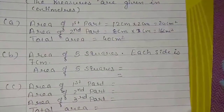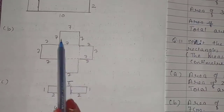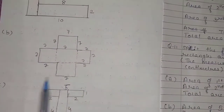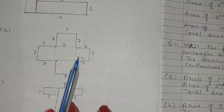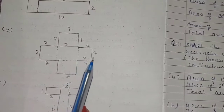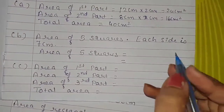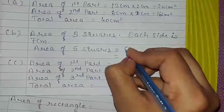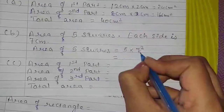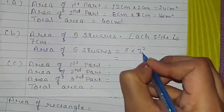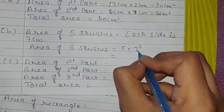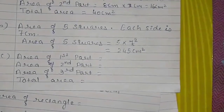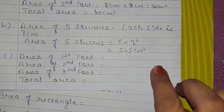Now part B. In question B, you can observe all shapes are squares. There are 5 squares, each with a side of 7 cm. So let us find the area of 5 squares with side 7 cm. Area of 5 squares equals 5 multiplied by 7 squared. Because area of square equals side multiplied by side, that is 7 cm. So 5 multiplied by 49 equals 245 cm square.